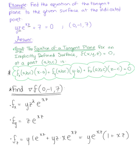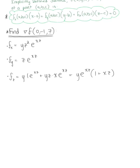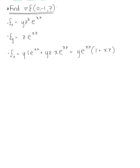We can simplify this, rewriting it as y times the natural exponential raised to xz, multiplied by 1 plus xz. Now we're ready to take these partial derivatives and evaluate them at our given point (0, negative 1, 7).